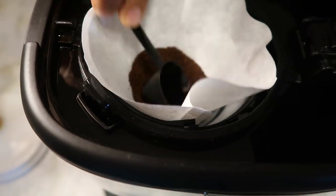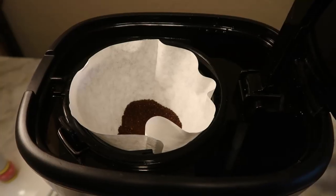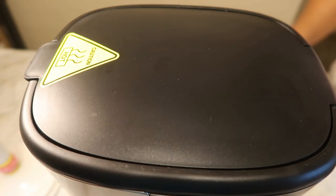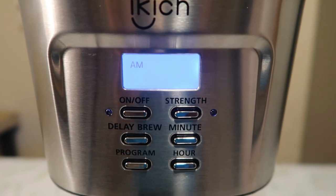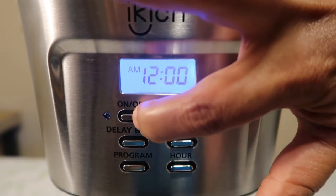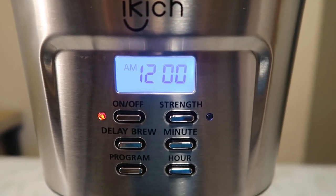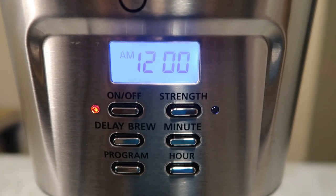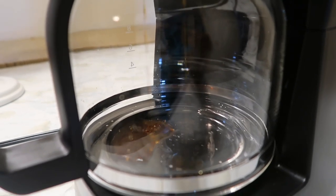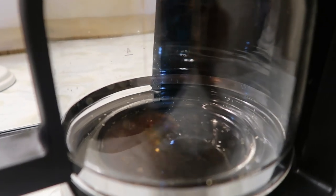Gently press the powder with the scoop. Close the lid and press the on button. If you want to adjust the coffee strength, you can press the strength button once, and then the strength indicator will illuminate in orange and the appliance will brew thick coffee.